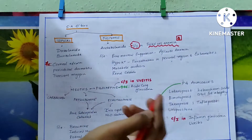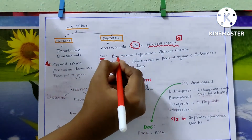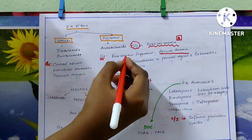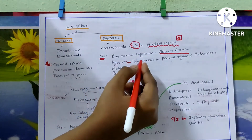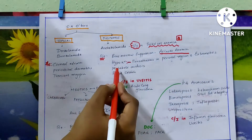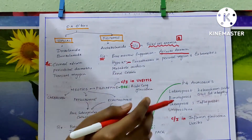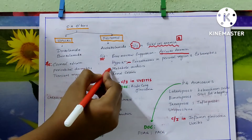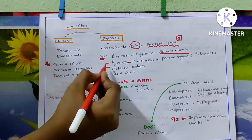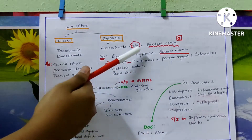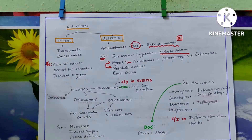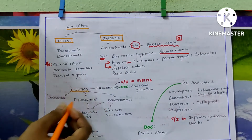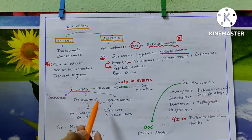Systemic acetazolamide is contraindicated in sickle cell anemia — an important exam question. It also causes bone marrow suppression leading to aplastic anemia. It causes hypokalemia, with symptoms including paresthesias in the periorbital region and extremities. It also causes metabolic acidosis. Note: this is an exception where metabolic acidosis and hypokalemia occur together as side effects of the same drug.